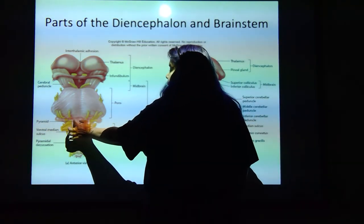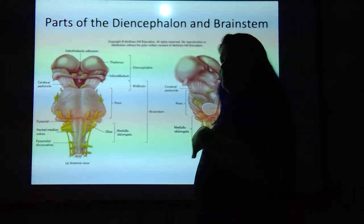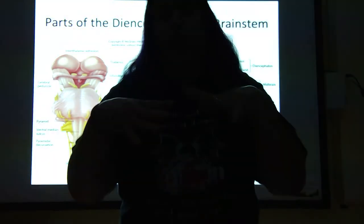Also in the medulla oblongata, you've got this pyramid area. Control of muscles — you've got these descending tracks coming down from your brain to control your body. As they come down, they basically cross, or if you want to be fancy about it, you can say they decussate. What that means is your opposite side of your brain controls the side of your body opposite to it.